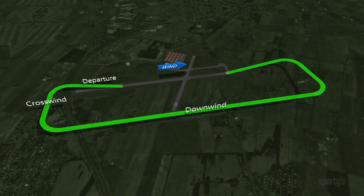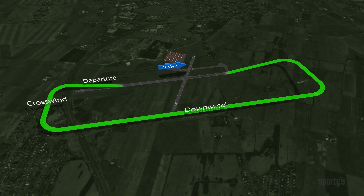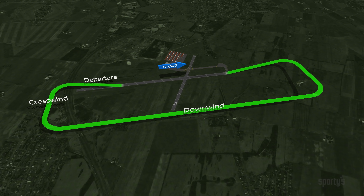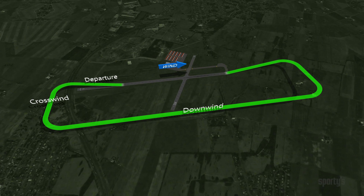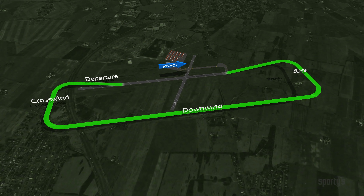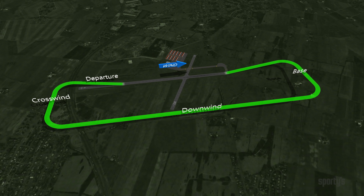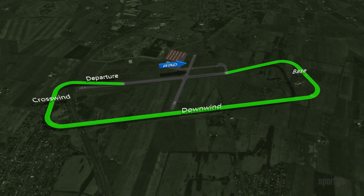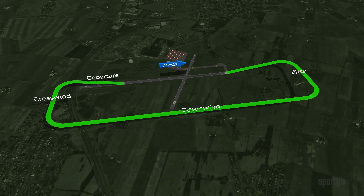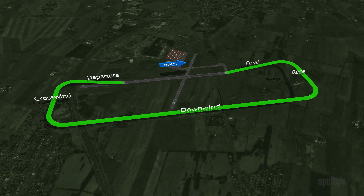You're on the downwind leg when you fly parallel to the landing runway but in the direction opposite to landing. The base leg is flown at a 90-degree angle to the landing runway and off its approach end. The airplane is on the final approach leg when it is aligned with the landing runway and therefore heading into the wind.